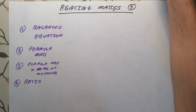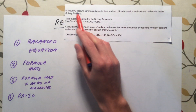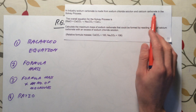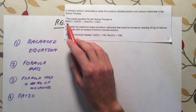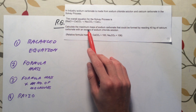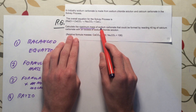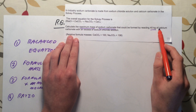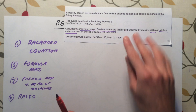The first example we are going to look at asks: in industry, sodium carbonate is made from sodium chloride solution and calcium carbonate in the Solvay process. The overall equation for the Solvay process is given. Calculate the maximum mass — a theoretical maximum value — of sodium carbonate that could be formed by reacting 40 kilograms of calcium carbonate with an excess of sodium chloride solution.